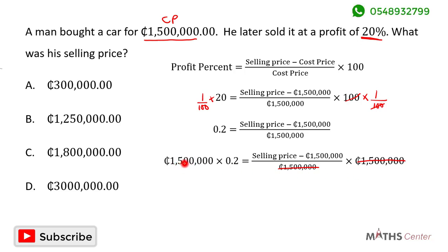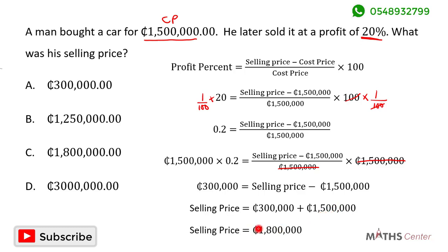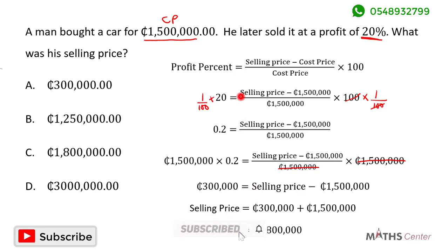1.5 million times 0.2 gives us 300,000 CDs, so we have 300,000 CDs equals the selling price minus 1.5 million. Therefore, the selling price equals 300,000 CDs plus 1.5 million, which gives us 1.8 million CDs. The selling price of the car was 1.8 million CDs.